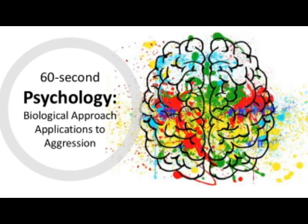Evolutionary psychologists suggest that aggressive behaviours result from genome lag. This means that the environment changes faster than our genes can adapt through natural selection, leaving us with behaviours that are no longer necessary in modern life. For example, the idea that men are sexually jealous may be explained through genome lag. During the environment of evolutionary adaptation, sexual jealousy was a useful characteristic as it ensured successful reproduction. Men used instrumental aggression to prevent a partner from having contact with other males. These aggressive actions are called mate retention strategies and still exist in the modern day.